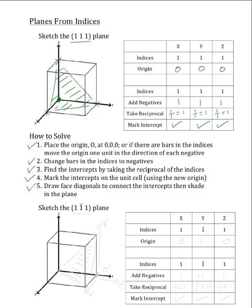Now for this bottom unit cell, we will be sketching the 1,1̄,1 plane. Our first step in solving this is to choose the origin. Because there is a bar in the indices, we will have to move the origin in order to keep the plane within the unit cell. In order to do this, we will move the plane one unit in the direction of the bar. So our new origin will be 0,1,0, which will place us right here on the unit cell.